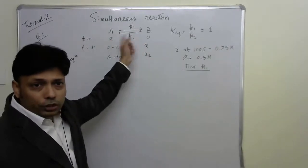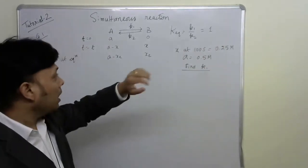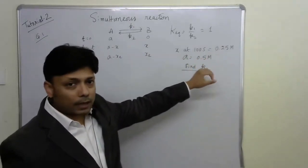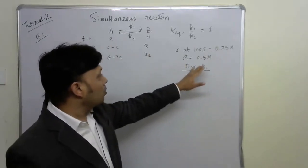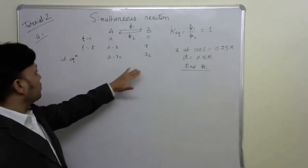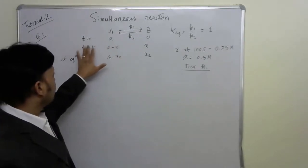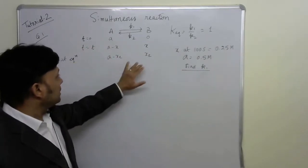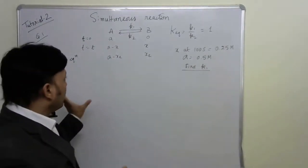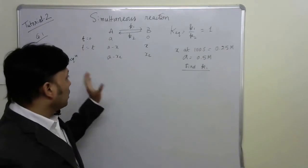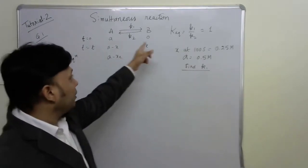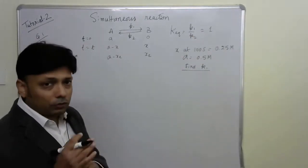We start with question number 1. It's a numerical problem given an opposing reaction where K_equilibrium is given as 1. It's also given that x, the concentration of B at 100 seconds, is 0.25 mol, and A with initial concentration is 0.5 mol. The question asks to find K1. At t=0 we have A0, at time t we have (A minus x) and x, and at equilibrium (A minus x_e) and x_e. We need to find the relationship between K1, K2, x, and t.